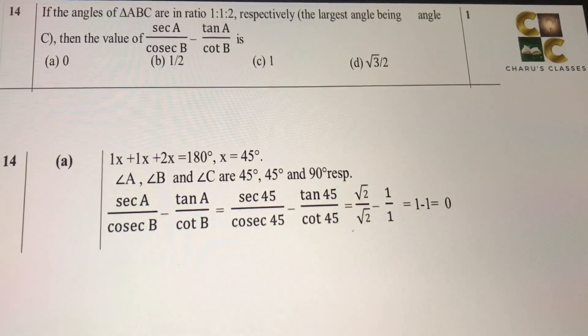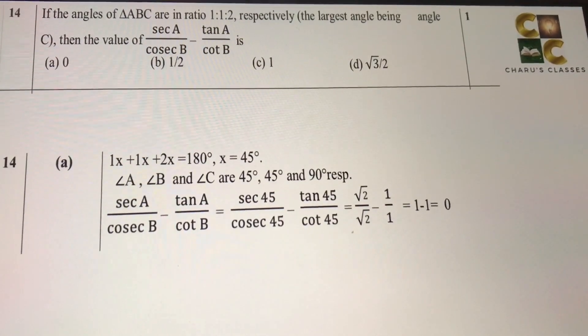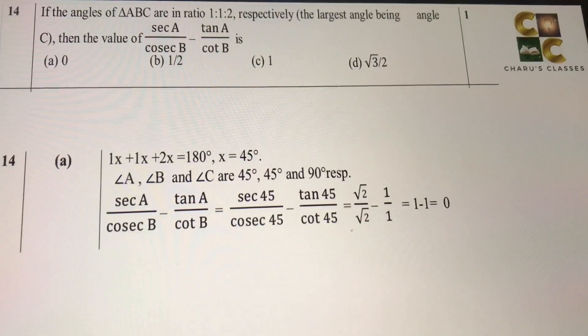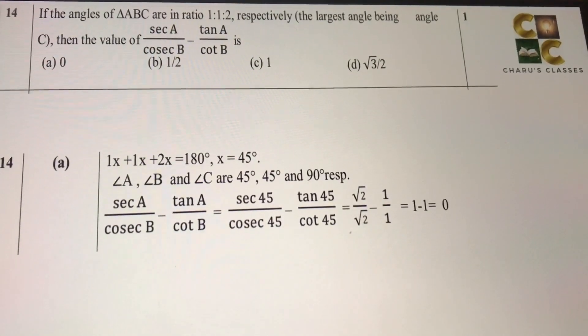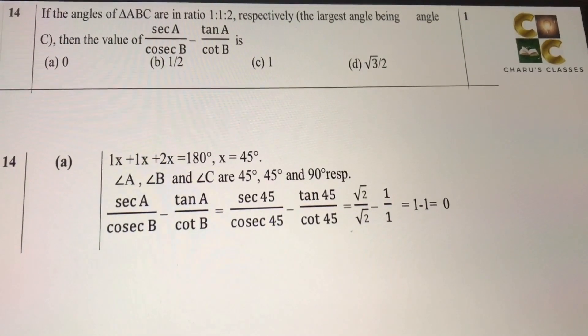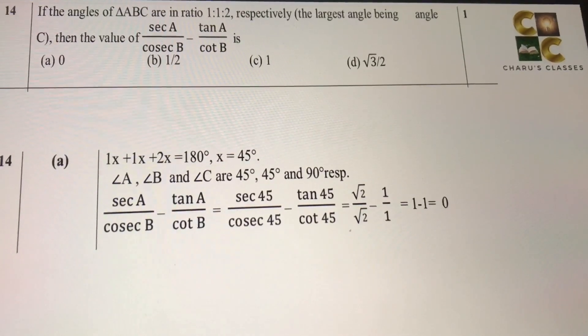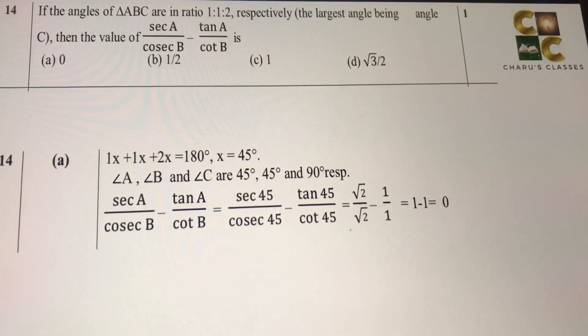Now we know ABC, we just have to find the values. So secant 45, that is root 2, by cosecant 45 is root 2, minus tan 45 is 1, and cot 45 is 1. So that gives us 1 minus 1, 0 as the answer.